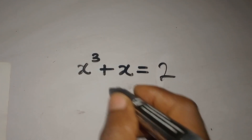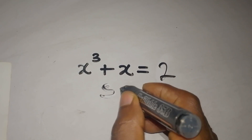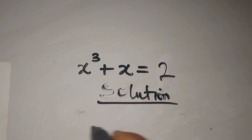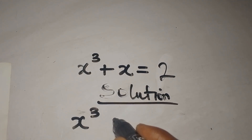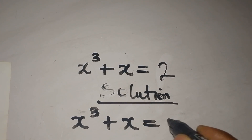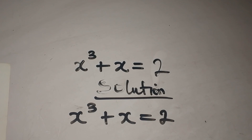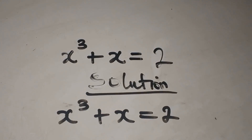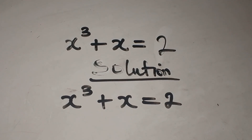Hi everyone, let's provide the solution to this problem very quickly. We have the square root of x to the power 3 plus x equals 2. This is simple because we know what to do already.